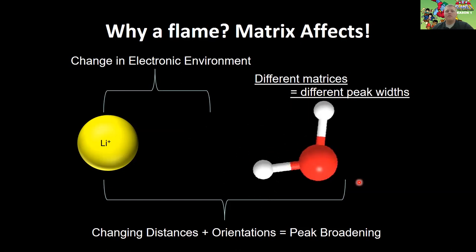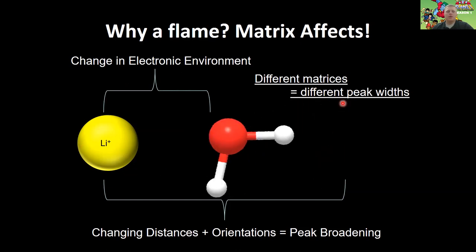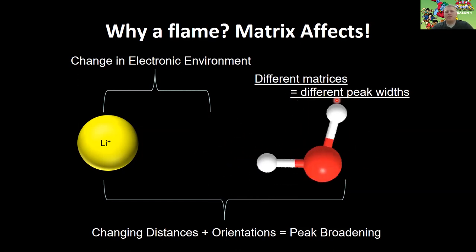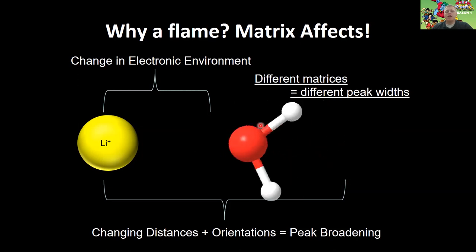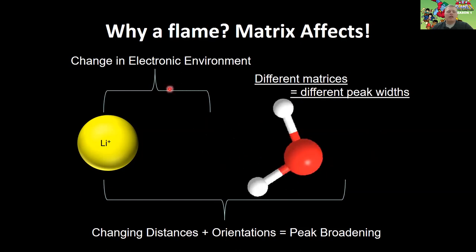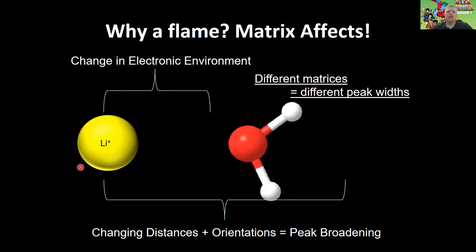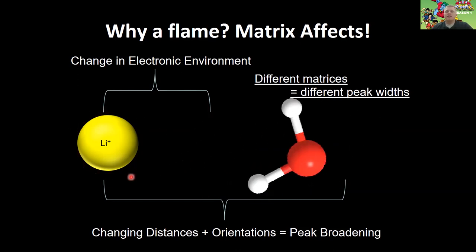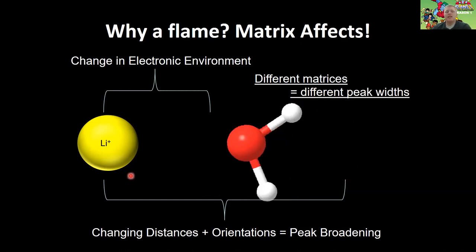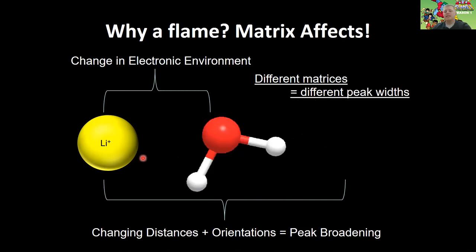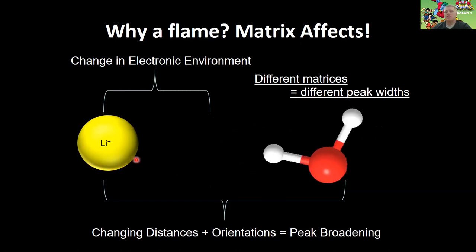But if you send this all through a really hot flame, it destroys all of these interactions — it basically turns everything into atoms. It vaporizes your water and breaks most hydrogen-oxygen bonds, leaving you with almost no intermolecular interactions. You're left with just the lone lithium ion again with its preset distances between electronic states. That gives you really sharp peaks, and because of those sharp peaks you can analyze multiple species at once using certain devices.